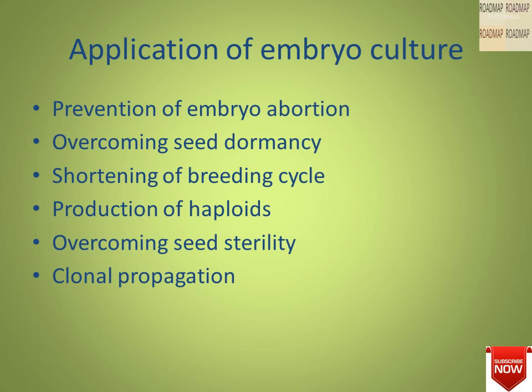The third application is the shortening of the breeding cycle. Some plants in their natural state have long breeding cycles, mostly due to seed dormancy attributed to the seed coat or endosperm. Embryos can be excised and cultured in vitro to develop into plants within a short period. For example, holly — a Christmas decoration plant — can be grown in two to three weeks through embryo culture, whereas through natural seed germination it takes around three years.